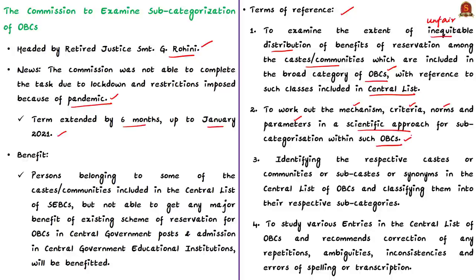The commission will identify the respective castes, communities, sub-castes, or synonyms in the central list of OBCs and classify them into their respective sub-categories. The commission will also study the various entries in the central list of OBCs and recommend correction of any repetitions, ambiguities, inconsistencies, and errors of spelling or transcription, because certain castes are left out of the ambit of reservation due to a difference in spelling in a state.